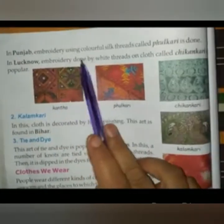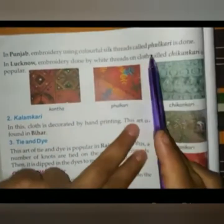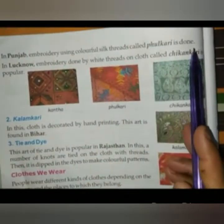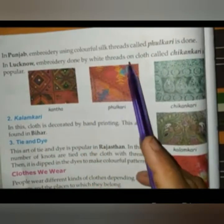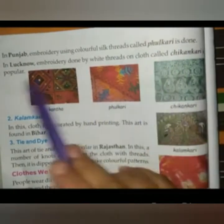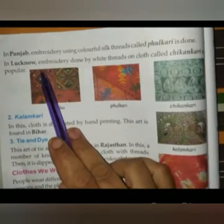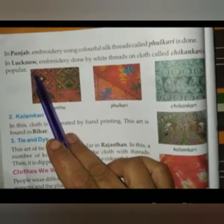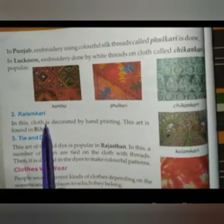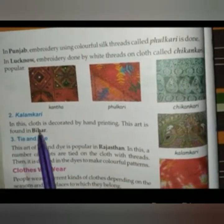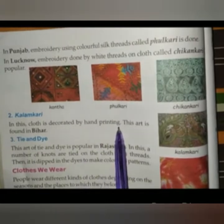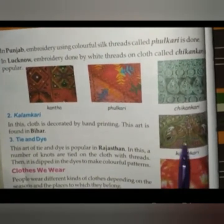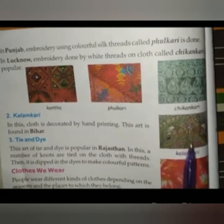In Punjab, embroidery using colorful silk thread called Phulkari is done. In Lucknow, embroidery done by white thread on cloth called Chikankari is popular. Kalamkari is a style where cloth is decorated by hand printing - this art is found in Bihar.